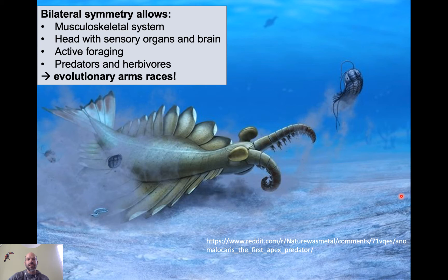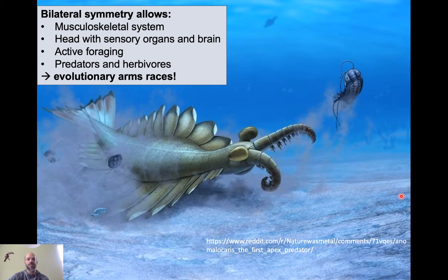Bilateral symmetry allows the development of specialized organs, tissues, and overall anatomical and physiological systems — for example, a musculoskeletal system for swimming and catching prey, the development of the head with sensory organs and a brain, active foraging, predators and herbivores, and much more complex and dynamic interactions between species. You get complicated ecological networks of predator and prey, leading to evolutionary arms races, with prey evolving shells and spines and predators evolving ways to get around those defenses — a major factor in the sudden explosion of diversity in the Cambrian.